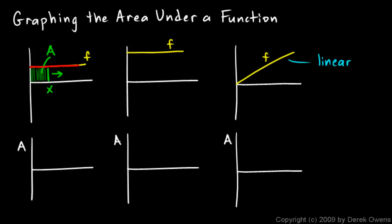In this first case, where my function f is perfectly flat, you should see that as x moves — if we imagine this vertical line sliding to the right at a steady rate — then the area A will increase at a steady rate. It starts at 0 because when x is 0, this line has not yet swept out any area. As this moves to the right, the area increases at a steady rate, so this graph slopes up and to the right, and it's linear.